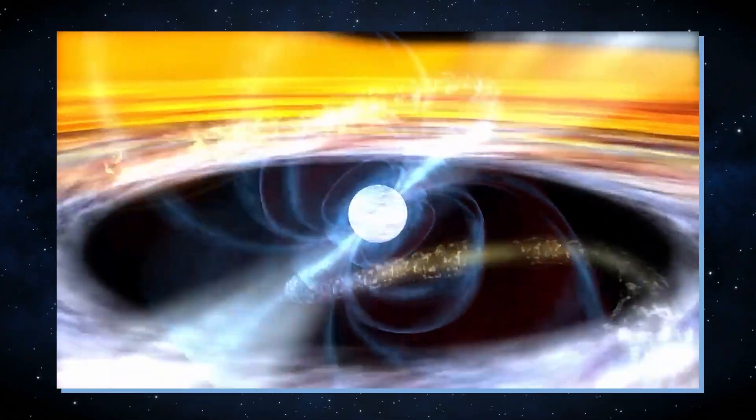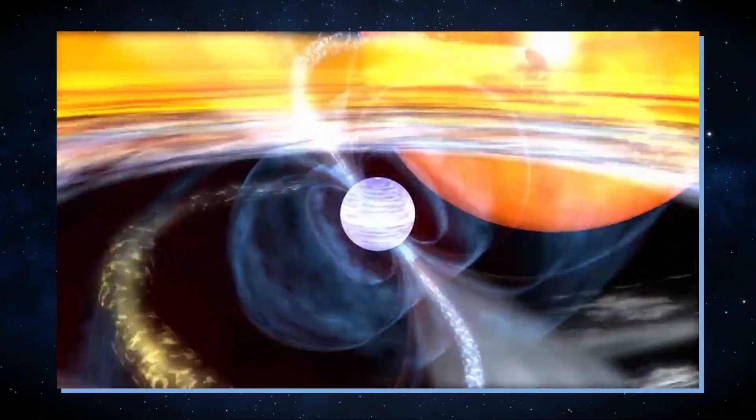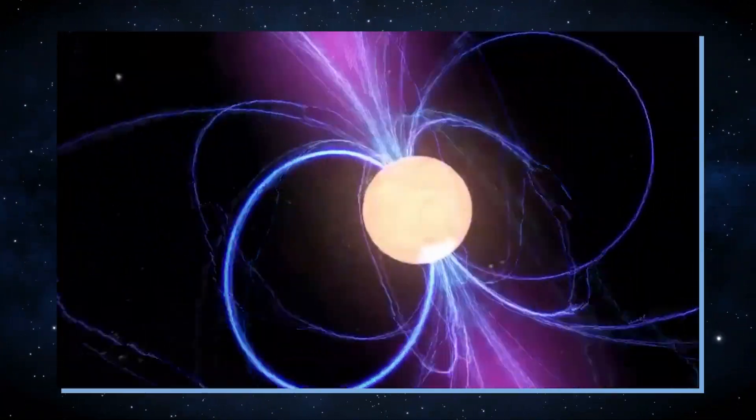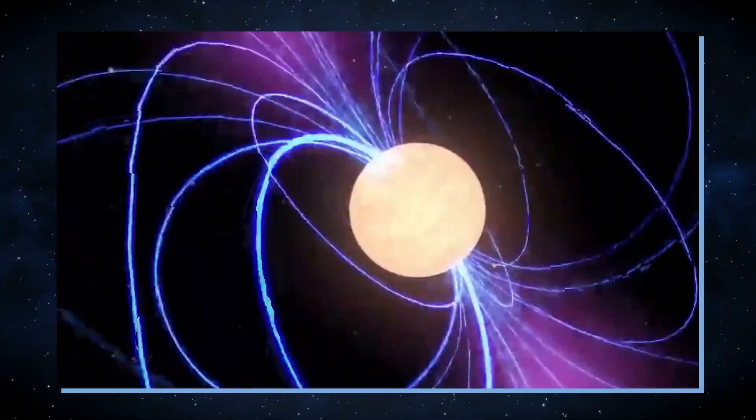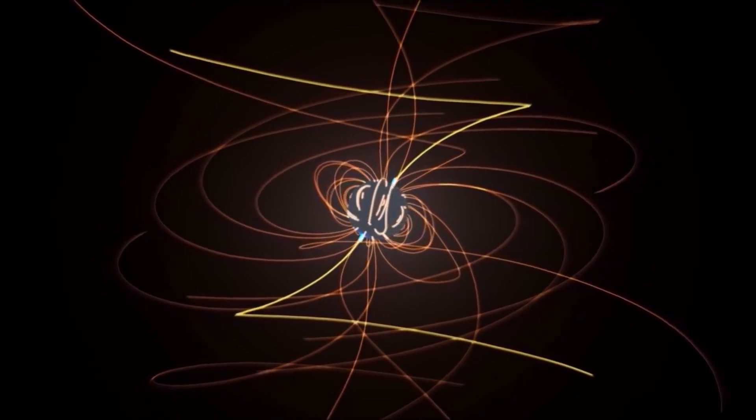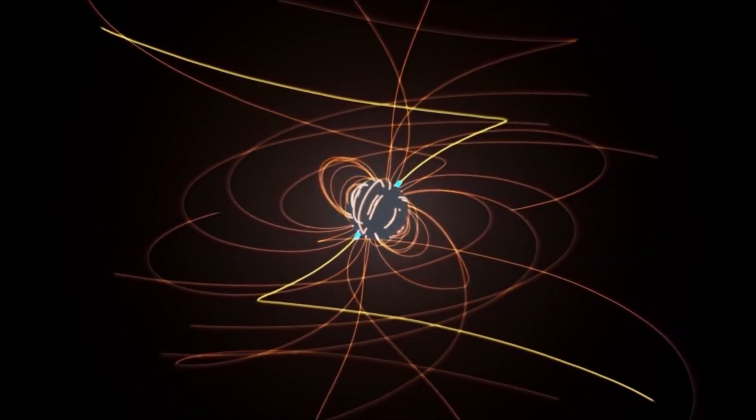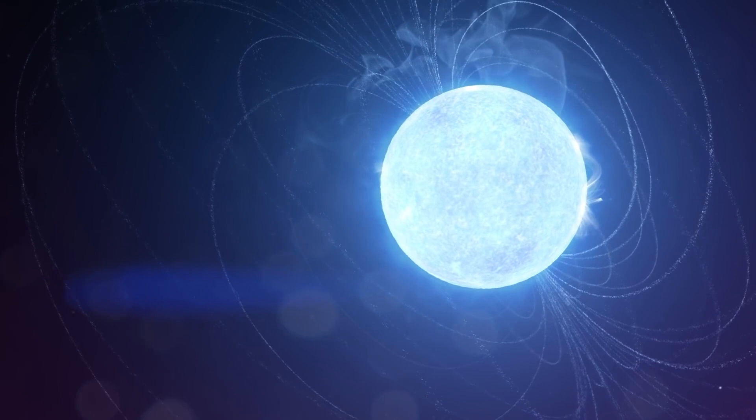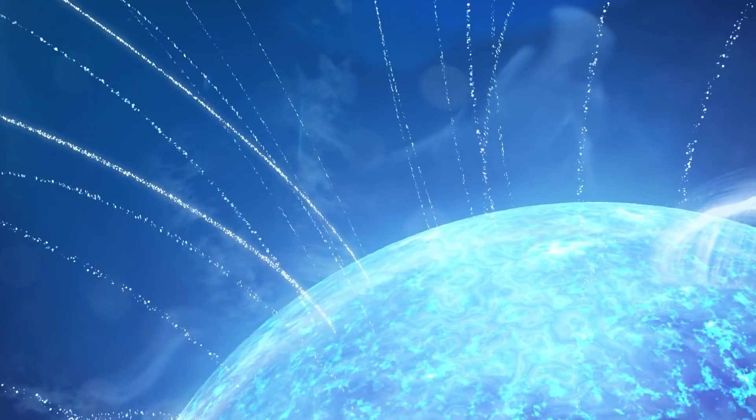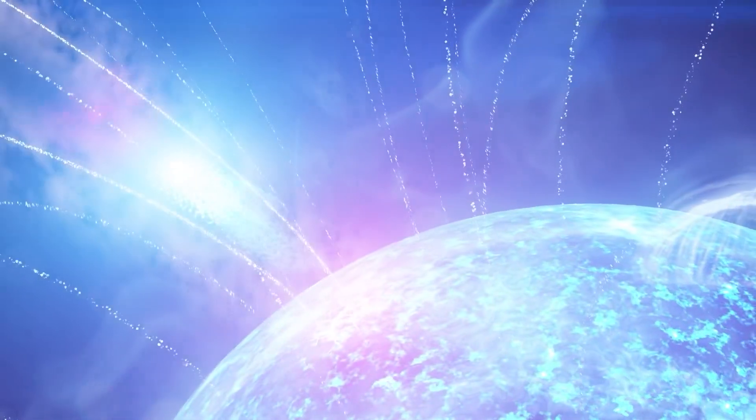While pulsars emit beams of electromagnetic radiation, magnetars are distinguished by their incredibly strong magnetic fields, which are orders of magnitude more powerful than those of typical neutron stars. This intense magnetic field can lead to remarkable and enigmatic behaviors, including bursts of X-rays and gamma rays.